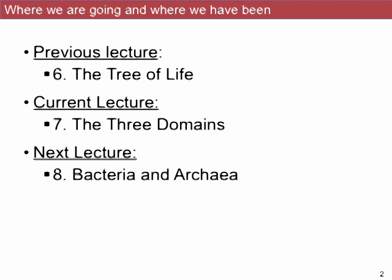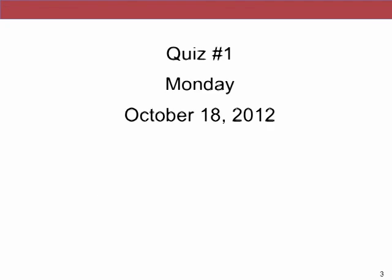We're going to talk in more detail about the three domains of life and the tree of life. As a reminder from the previous lecture, we talked in part about the tree of life. We're going to finish that up and talk about the three main lineages of life, also called the three domains. And then in the next lecture, we're going to talk about two of these three domains in particular, the bacteria and the archaea and some of their diversity.